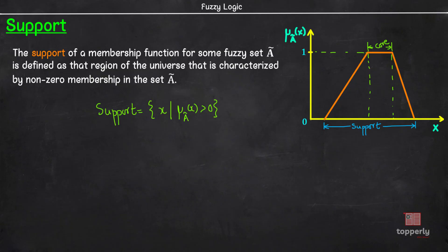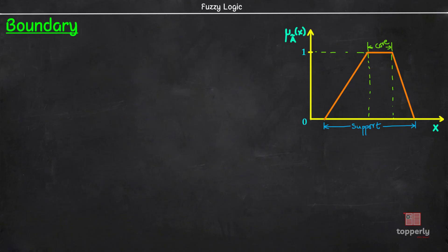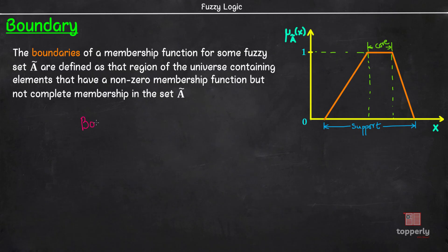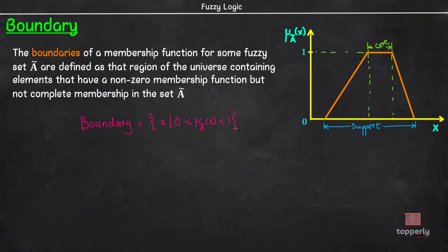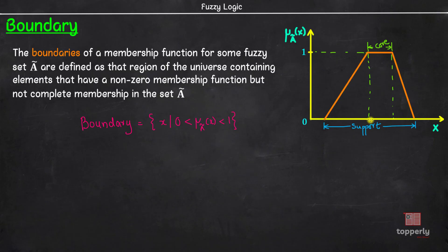Moving on to the next terminology, we have boundary. Boundaries comprise of those elements X of the universe such that the membership value of X in the fuzzy set A is greater than 0 but less than 1. In this graph, we can represent these two regions as boundaries as they have partial membership values here. So boundaries are these two regions.